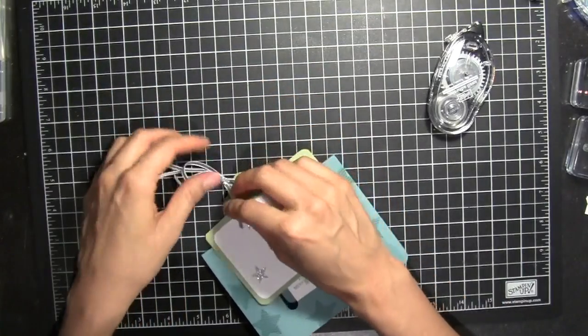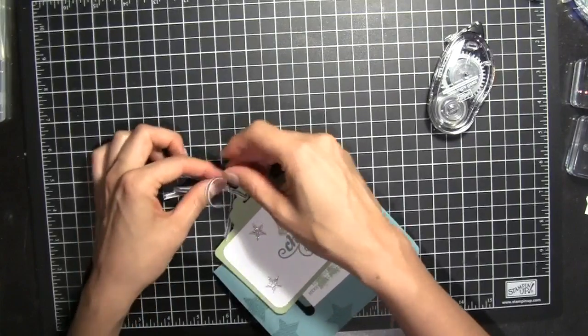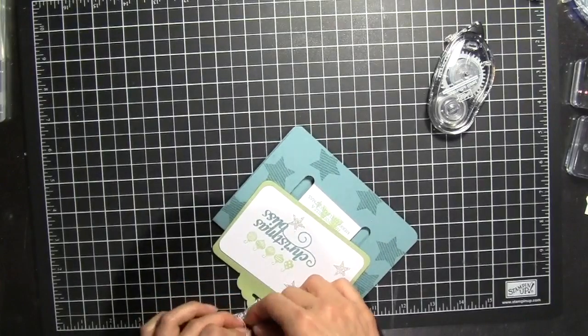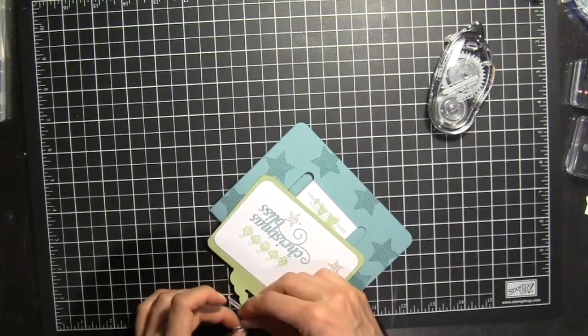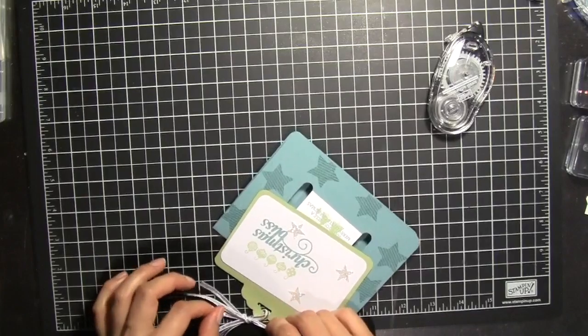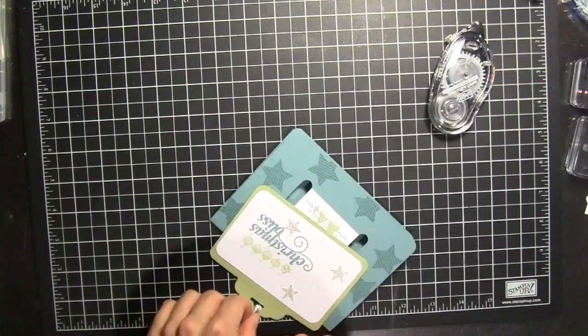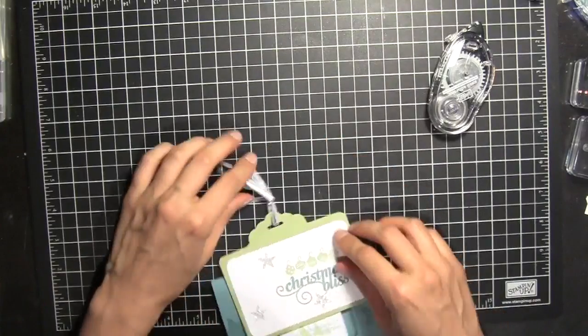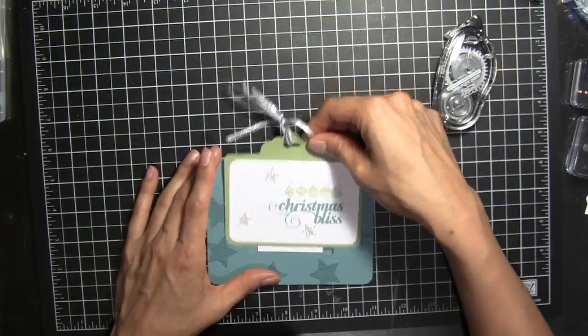And we have this kind of fun going here. I'm going to do a double knot. So one more time. So we have our fun slider card.